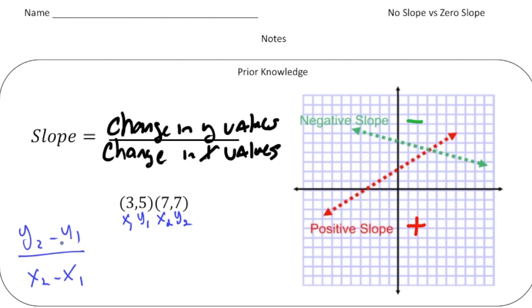So if I do y2 take away y1, 7 take away 5. And then if I do x2 minus x1, 7 take away 3. So 7 take away 5 is 2. And 7 take away 3 is 4. And that reduces down to 1 half. Okay, and 1 half is a positive number. So we know this is going to be an upward looking slope. It's going to be a positive slope.